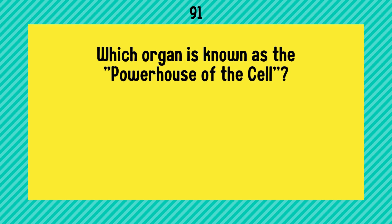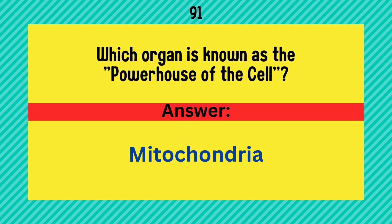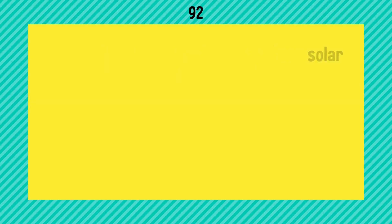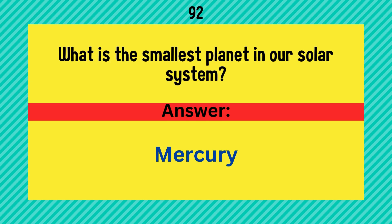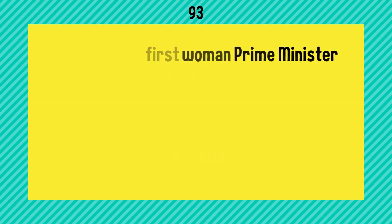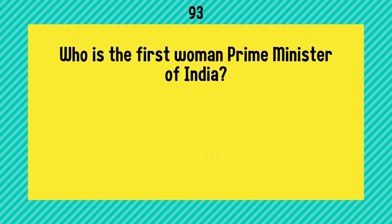Which organ is known as the powerhouse of the cell? Answer is mitochondria. What is the smallest planet in our solar system? It is Mercury.